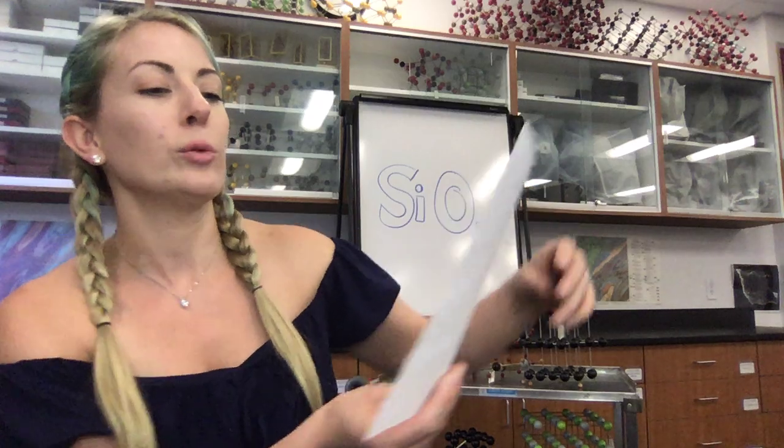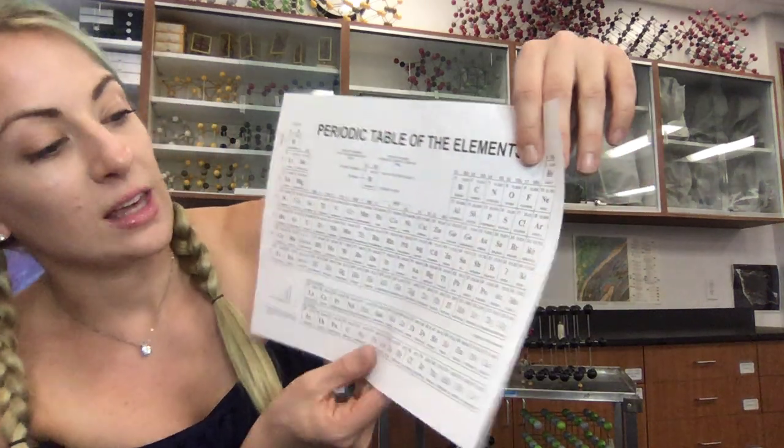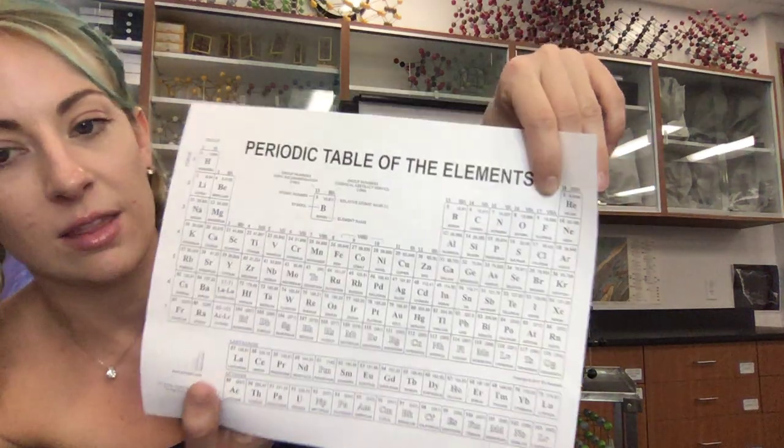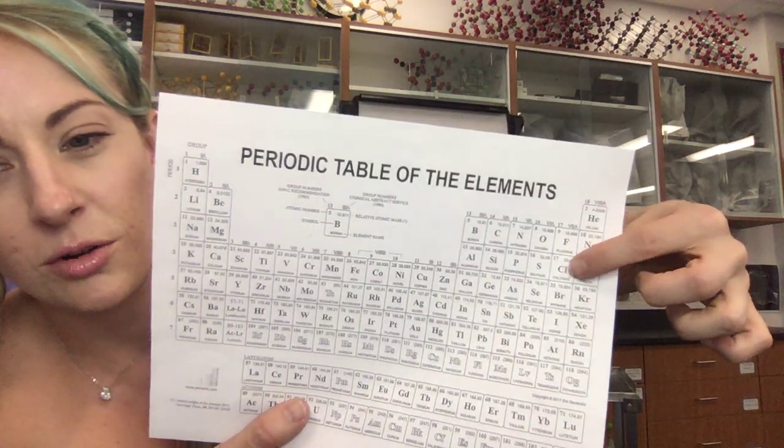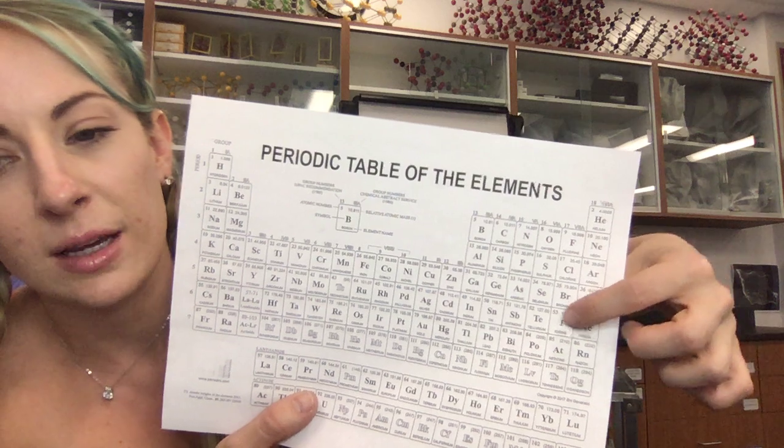For the halides specifically, we have a halide group. Here we have the halides group on the table of elements. We have that chlorine right there. We also have fluorine, bromine.